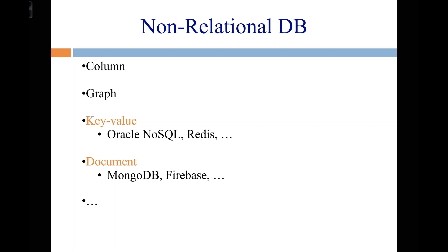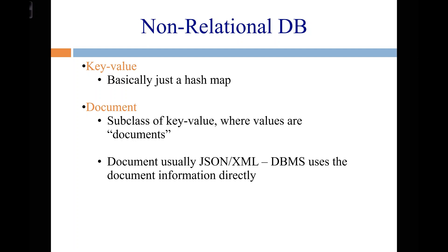The ones we're going to talk about today are key-value stores and document databases. You may have heard of Redis or Oracle NoSQL — you've probably heard of Firebase. We're going to talk mostly about MongoDB. Firebase and MongoDB are document databases. A key-value store is basically a hash map — you set up certain collections, specify the type of the key and the type of the value, and that's the most basic idea. A document database is a subclass of key-value store where the value is what they call a document — usually a JSON object or some XML.